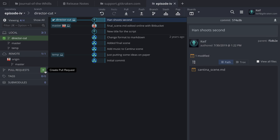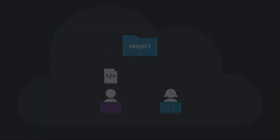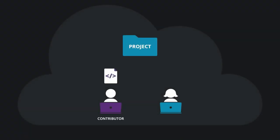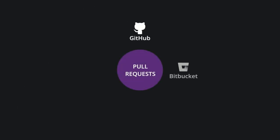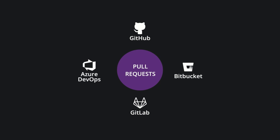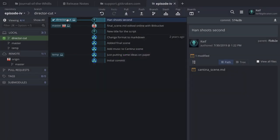A pull request — also known as a merge request — is an event where a contributor asks a repo maintainer to review code they wish to merge into a project. While pull requests are not a core Git feature, they are a common collaboration feature of Git hosting services like Bitbucket. In my case, I wish to create a pull request to merge director-cut into master.